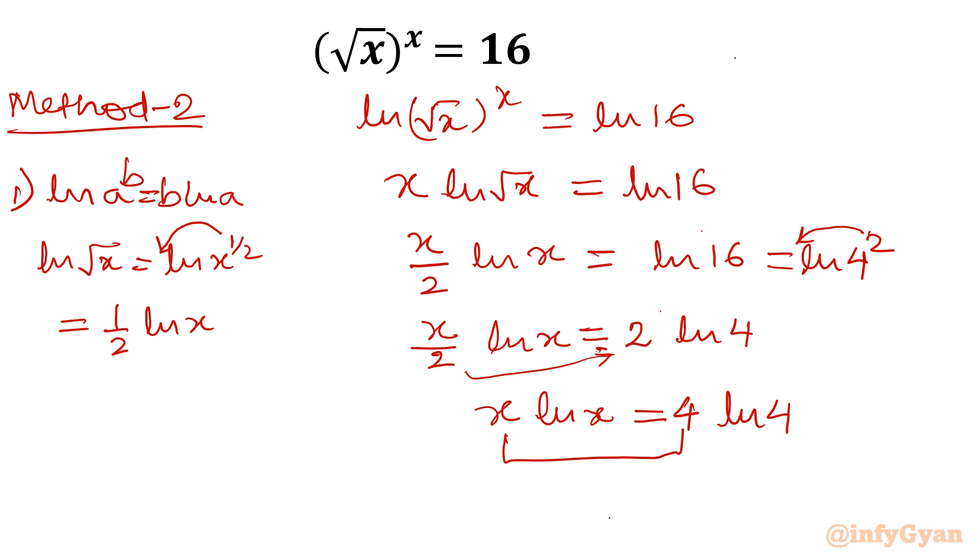Now just by comparing again both sides, we can conclude x ln x in the form 4 ln 4. So we can conclude from here we will get x equal to 4 again. Now come to method number 3.